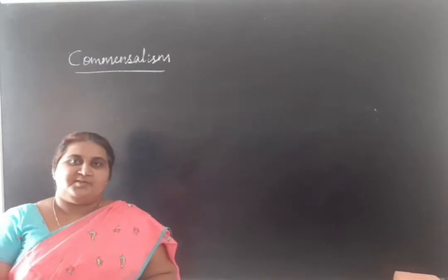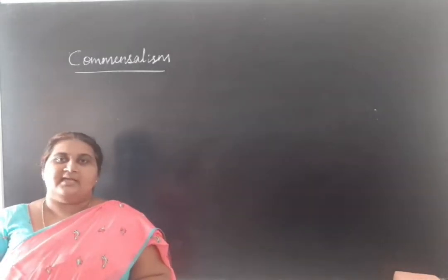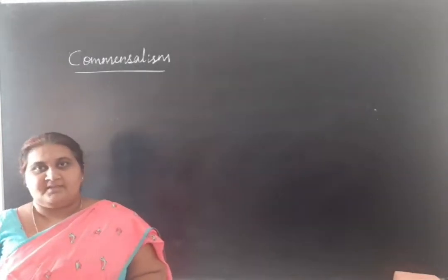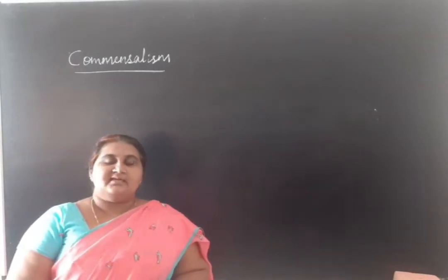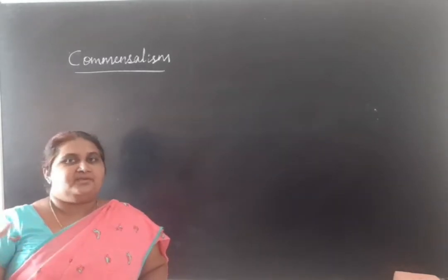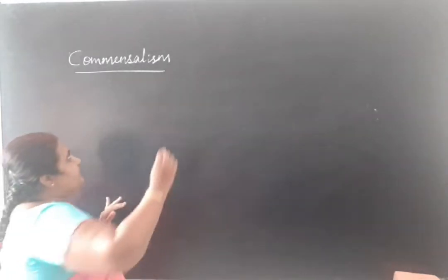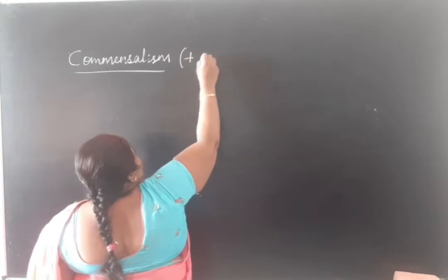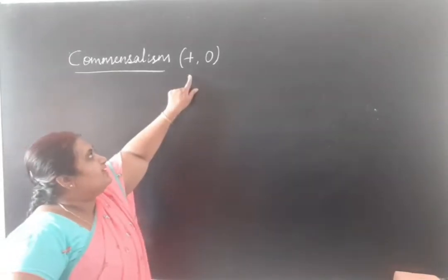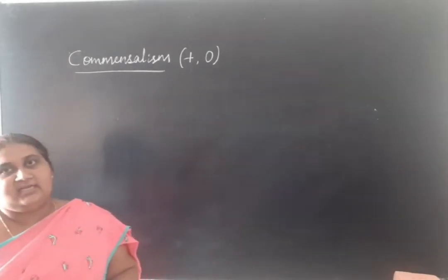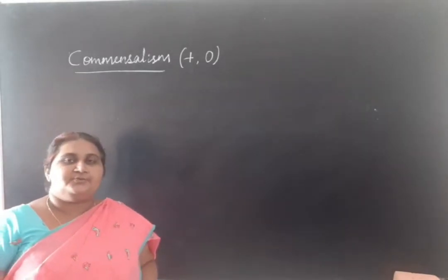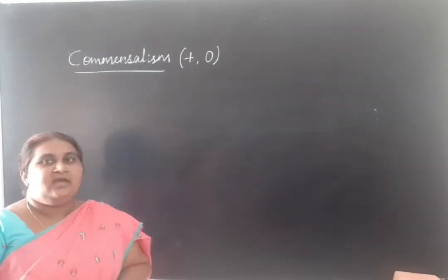In commensalism, one species is benefited and another species is neither benefited nor harmed. It is an inter-specific interaction, meaning this population interaction occurs between two different species, where one is benefited and another remains neutral. So here we can assign one plus and another zero — one remains neutral and another is being benefited.